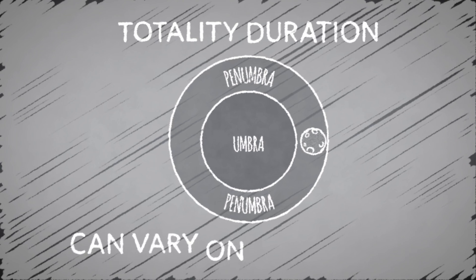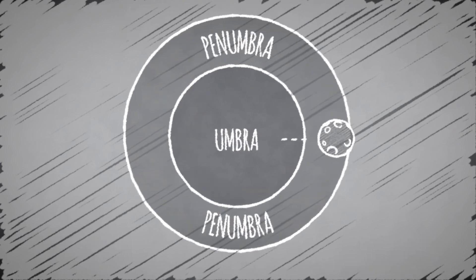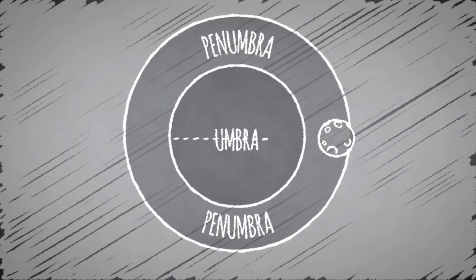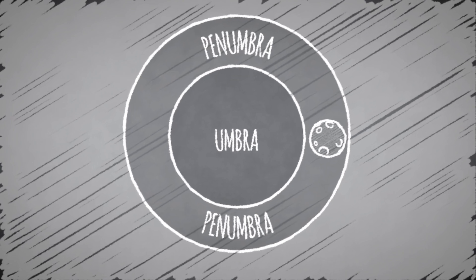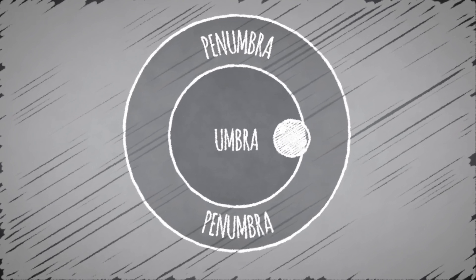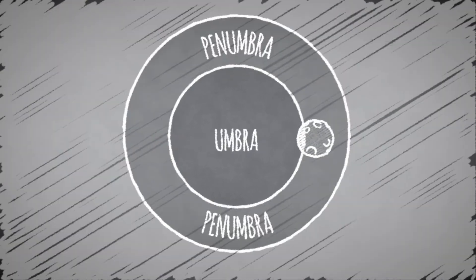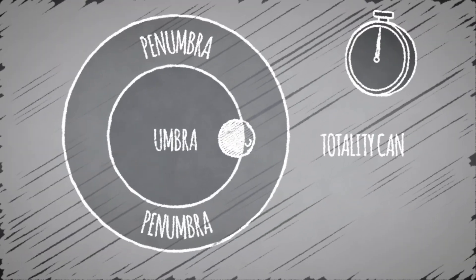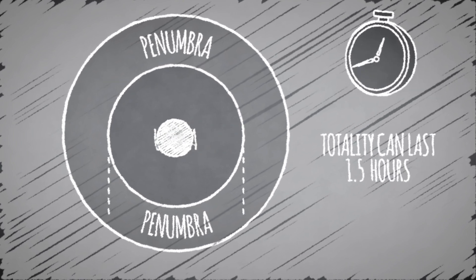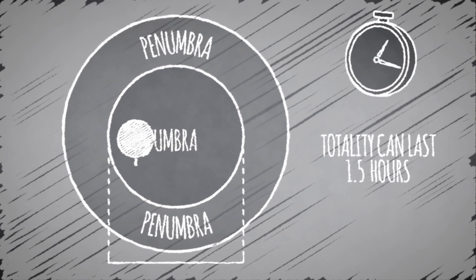The duration of totality may vary. If the moon takes the longest path through the very center of the umbra, the partial phases—that is, when it's entering or exiting the umbra—may take about an hour each. Totality may last as long as an hour and a half, because the diameter of Earth's umbra is several times larger than that of the moon itself.